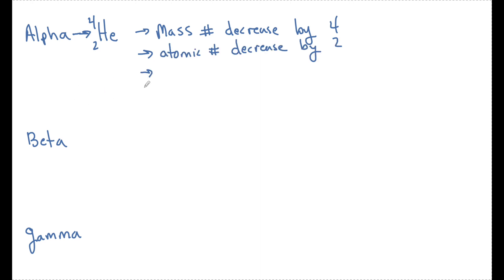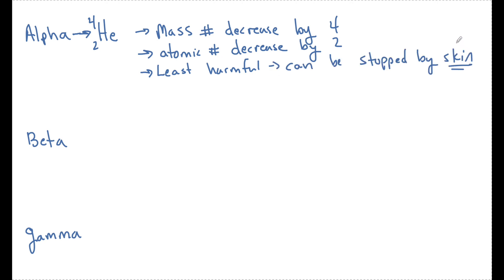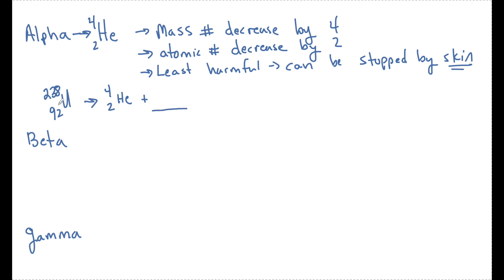If we talk about the harm or the danger of these particles, alpha are the least harmful — they can be stopped by our skin, so it's really only harmful to us if we ingest it. Let's look at finding the products and how we can balance these equations. Let's say I have an isotope of uranium with an atomic number of 92 — uranium-238. In the first case, this uranium goes through alpha decay and we want to know what element is going to be the result of this alpha decay.